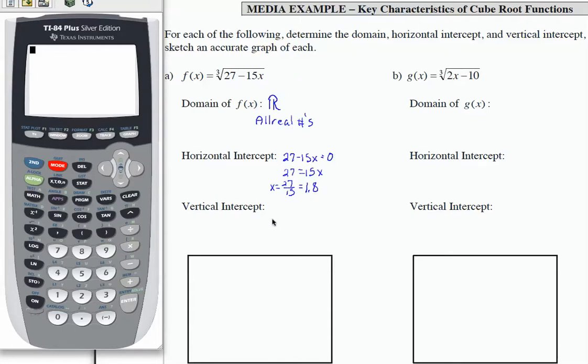For my vertical intercept, I need to evaluate f(0), and that's going to be the cube root of 27 minus 15 times 0. So that's going to be the cube root of 27. What times itself 3 times is 27? Well, that's 3. So my vertical intercept is going to be (0, 3). Up here on the horizontal, let's actually write that as an ordered pair, (1.8, 0).